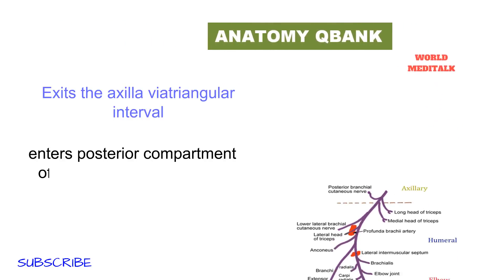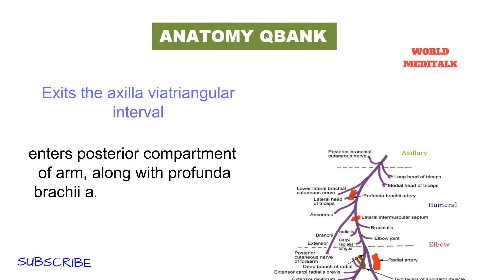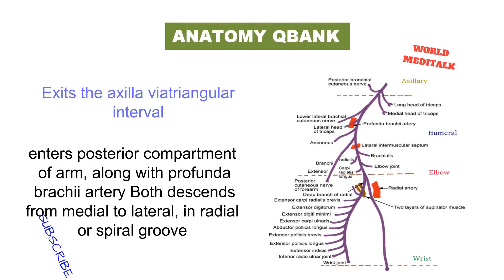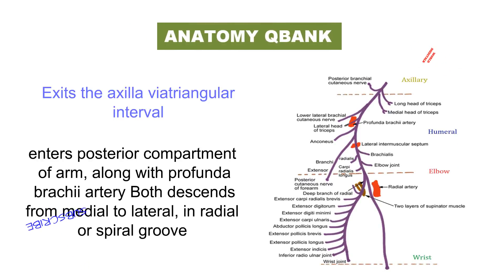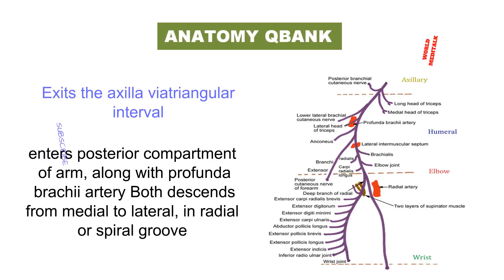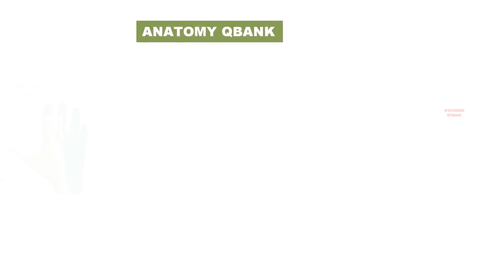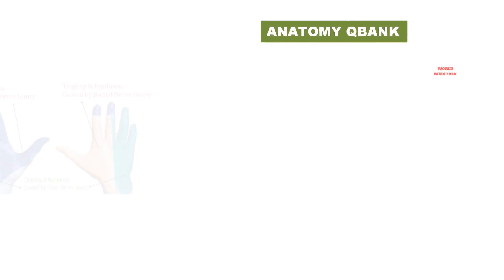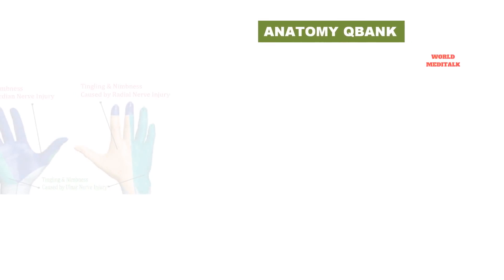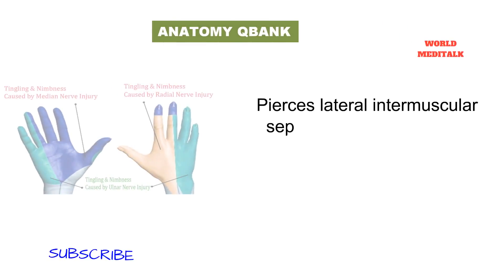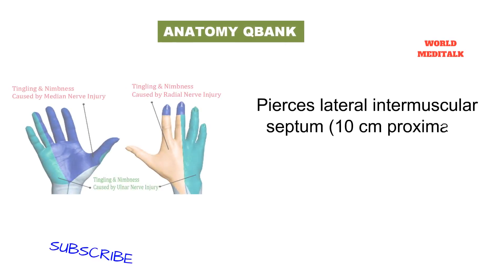Radial nerve compression or injury can occur at any point along its anatomical course. The most frequent site of compression is in the proximal forearm in the area of the supinator muscle, involving the posterior interosseous branch. Problems can also occur proximally with fracture of the humerus at the junction of the middle and proximal third, as well as distally on the radial aspect of the wrist.